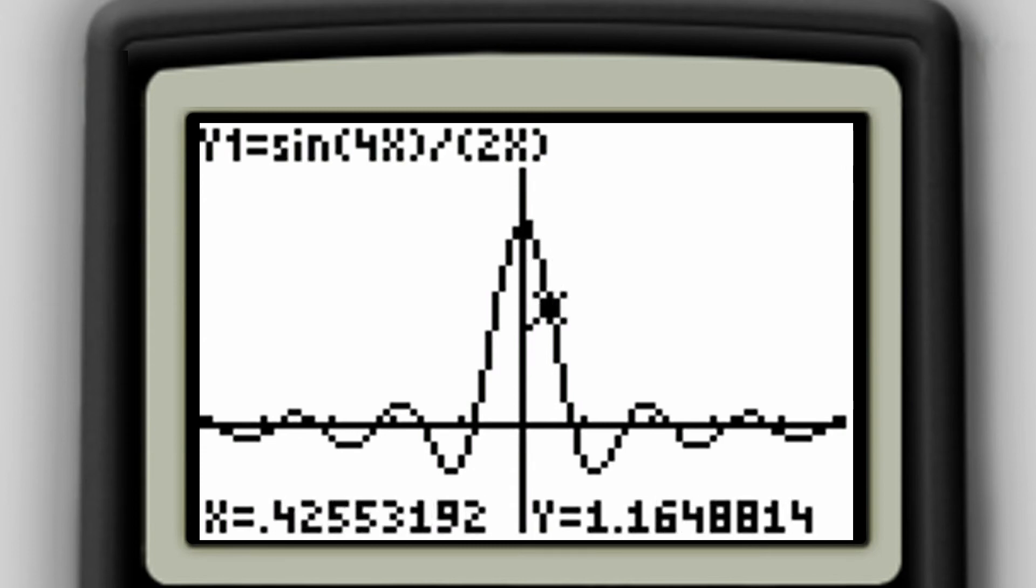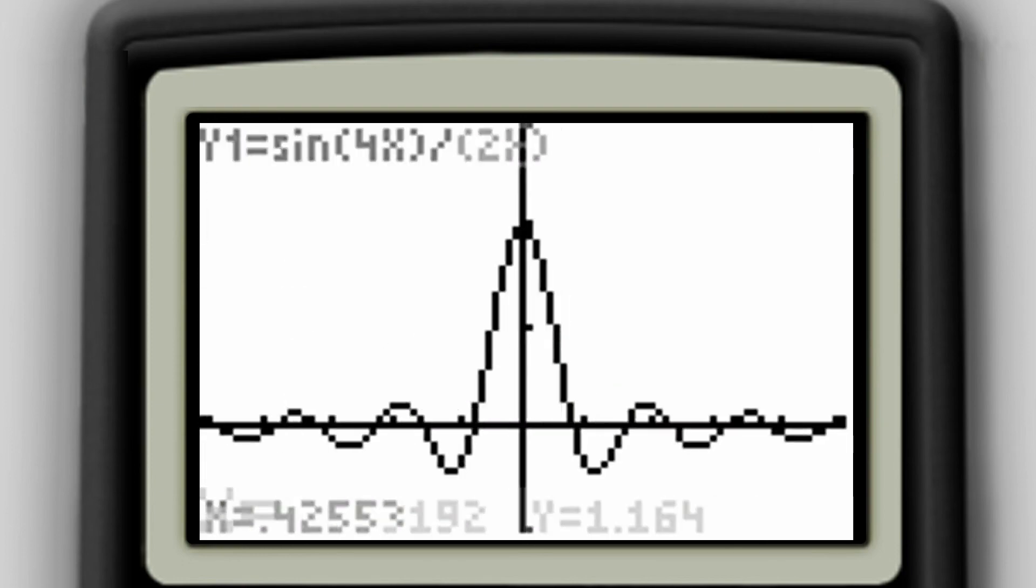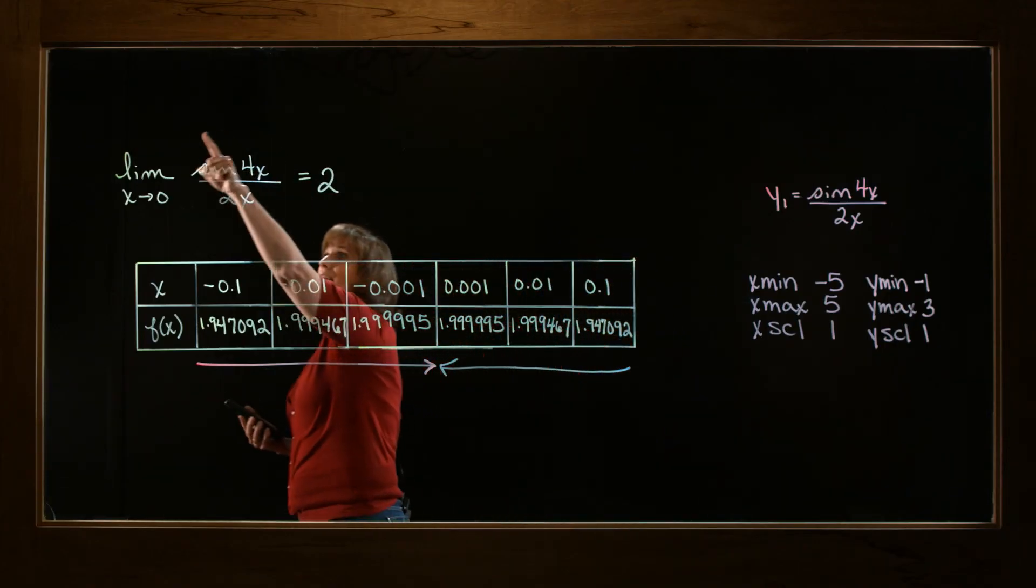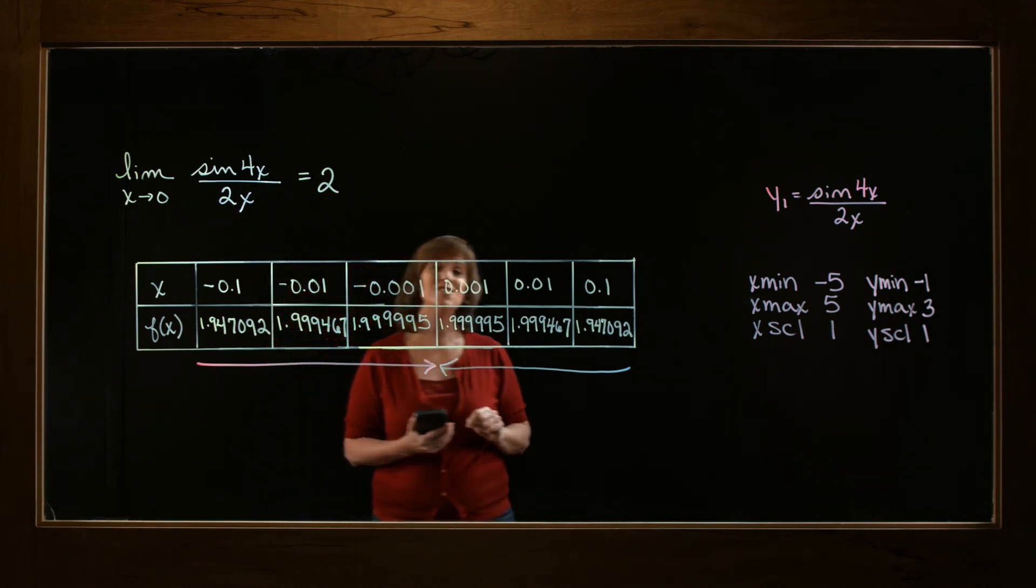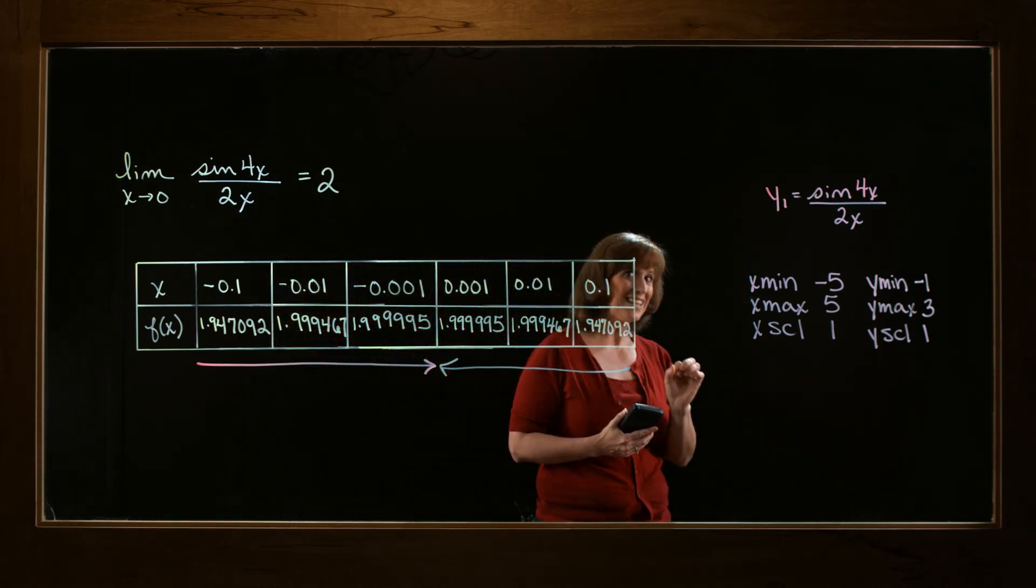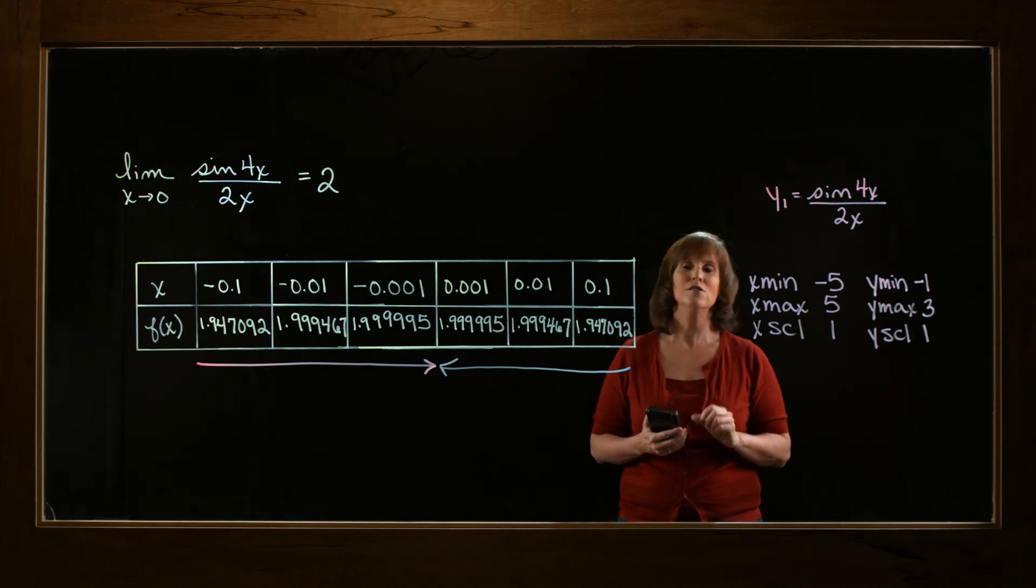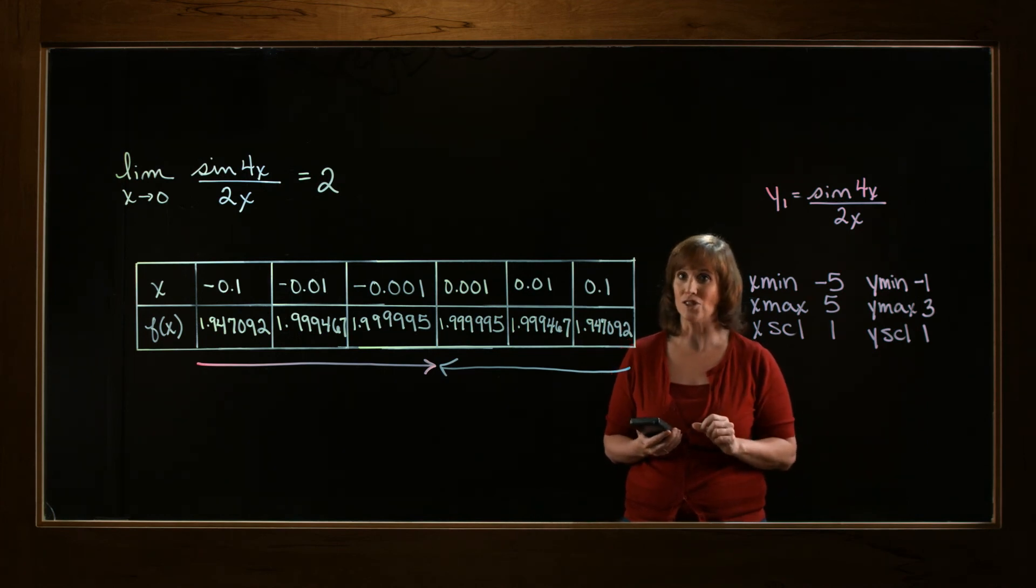Now, one thing that's kind of interesting, try doing an evaluate. So evaluate my function at 0. When you evaluate the function at 0, you'll notice that it does not give you a solution. That's because this function is not defined at 0. Technically, there's a hole in the graph there. So the value never actually reaches 2.